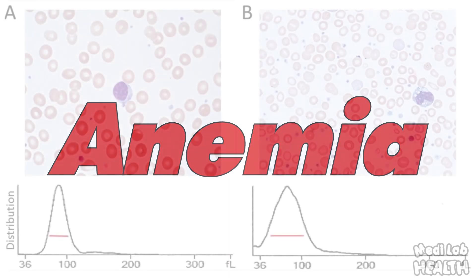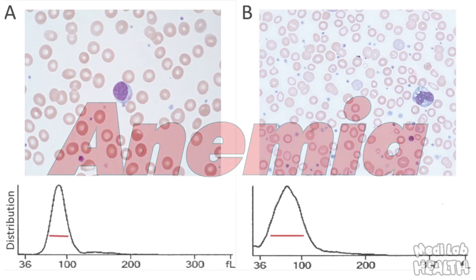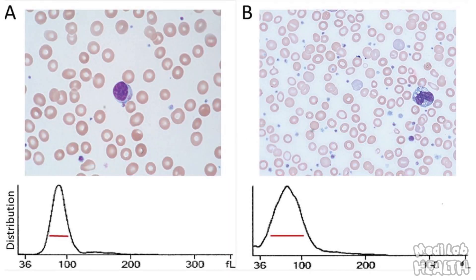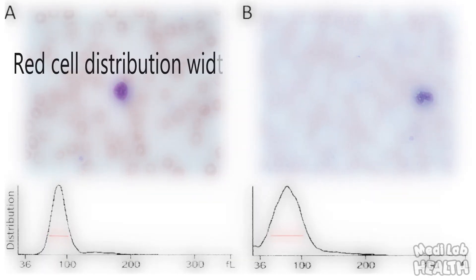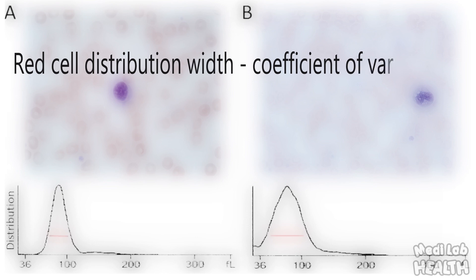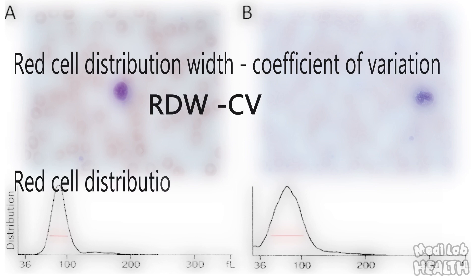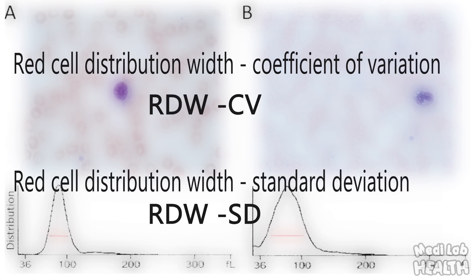The red cell distribution width is a measurement derived from the red blood cell distribution curves generated on automated hematology analyzers. The two RDW measurements currently in use are the red cell distribution width coefficient of variation (RDW-CV) and the red cell distribution width standard deviation (RDW-SD).